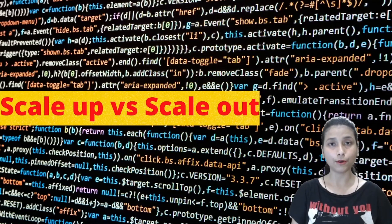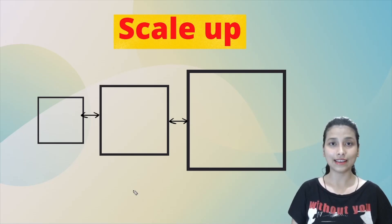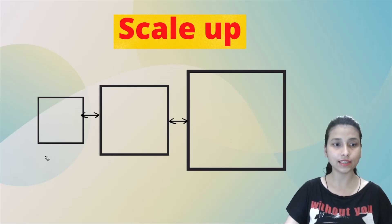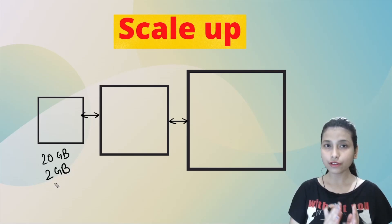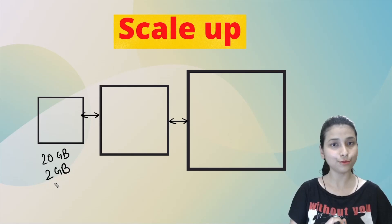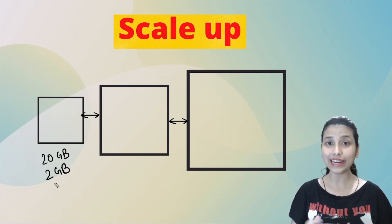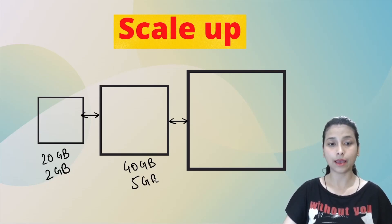Let us first start with the scale up approach. As an example, suppose for the time being I have a requirement of a system having 20 GB of disk size and 2 GB of RAM. I'll configure a system according to my need. Now suppose for some reason my requirement changes and I need a system having 40 GB of disk size and 5 GB of RAM.